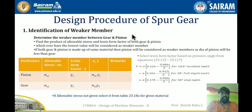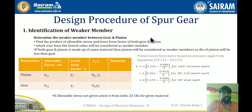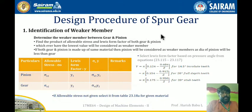In this video we are going to discuss about the design procedure used for the design of a spur gear. Before going through the steps, we have to identify the given data. The given data will be the power that has to be transmitted, RPM of pinion and gear. They may give the diameter of the pinion and gear, and the material of the gear and the pinion. Based on that, you find out the velocity ratio and other things.